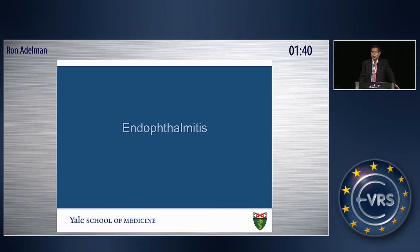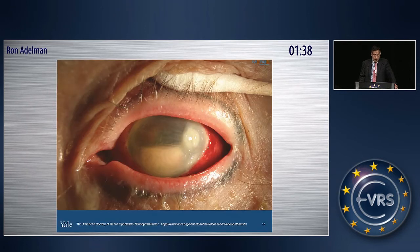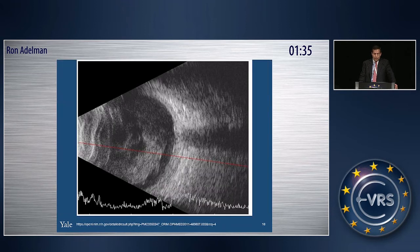Endophthalmitis is well known — there is hypopyon, and the hallmark is vitritis. If you see vitritis on V-scan, then that is endophthalmitis, not TASS.